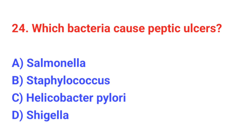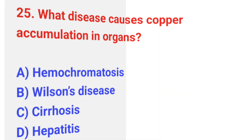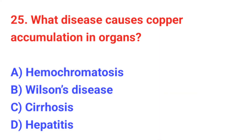Question number 24: Which bacteria cause peptic ulcers? The correct answer is C: Helicobacter pylori. Question number 25: What disease causes copper accumulation in organs? The correct answer is B: Wilson's disease.